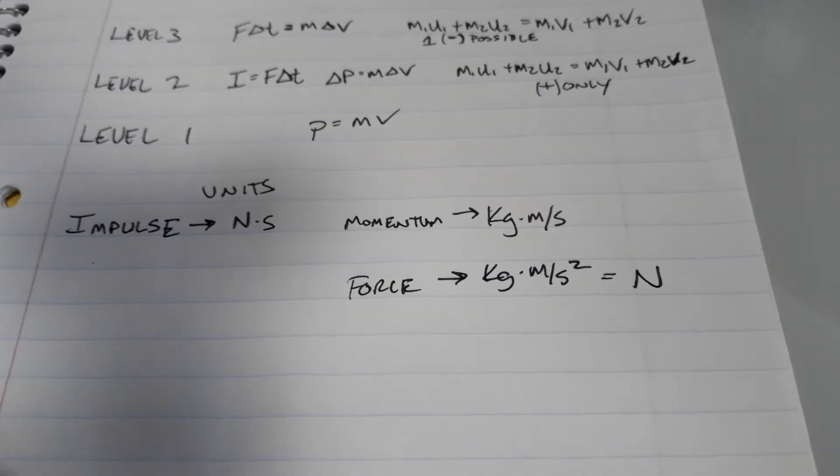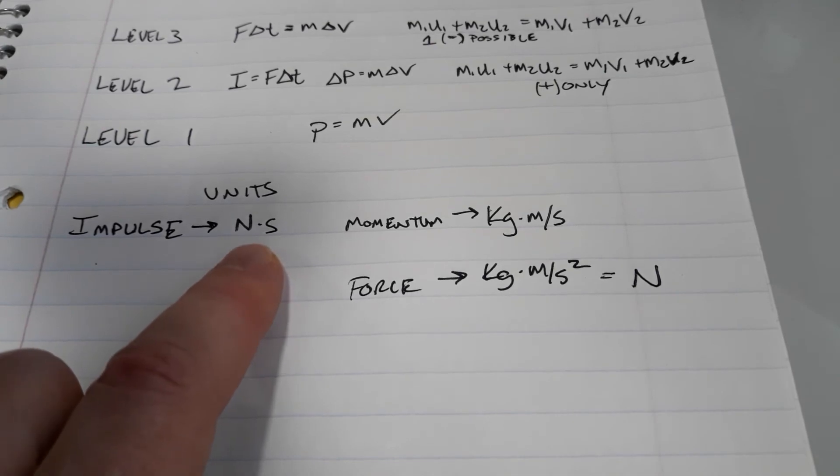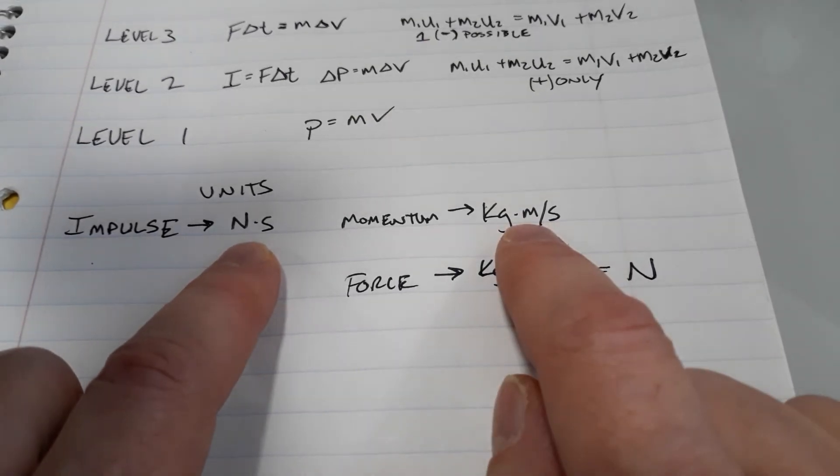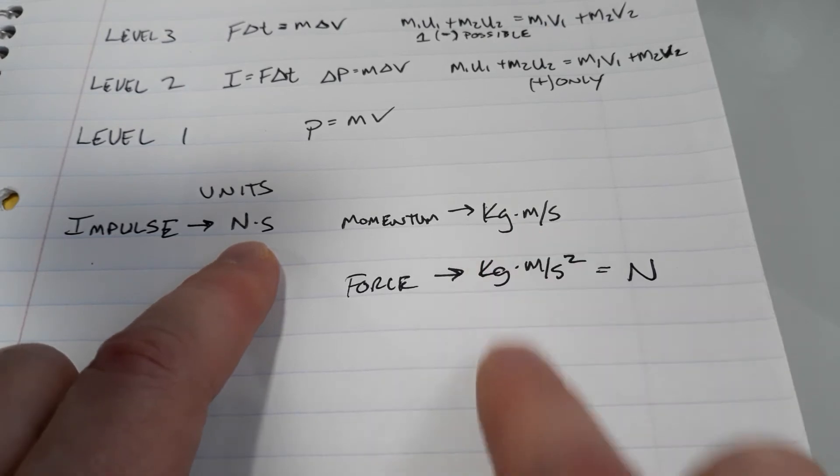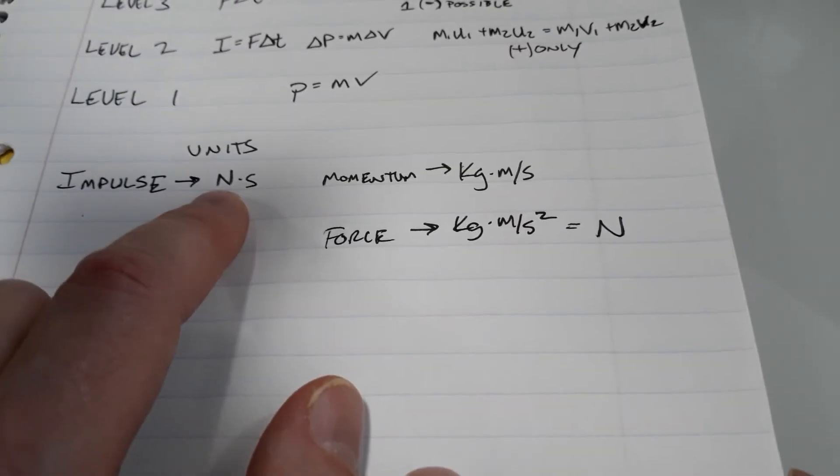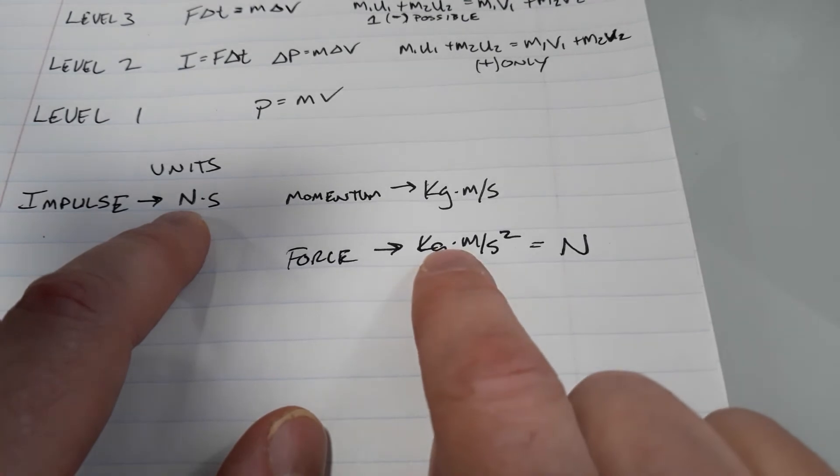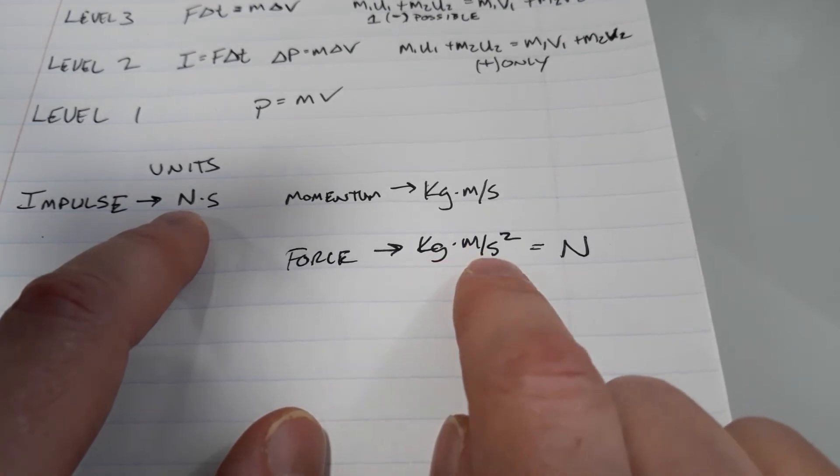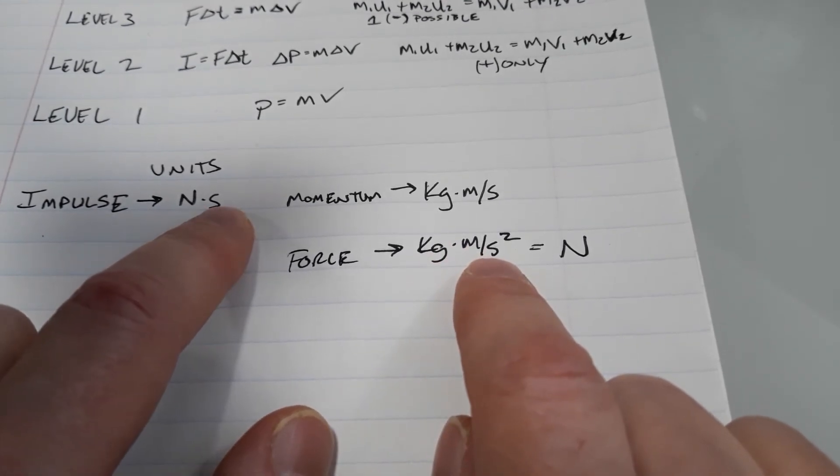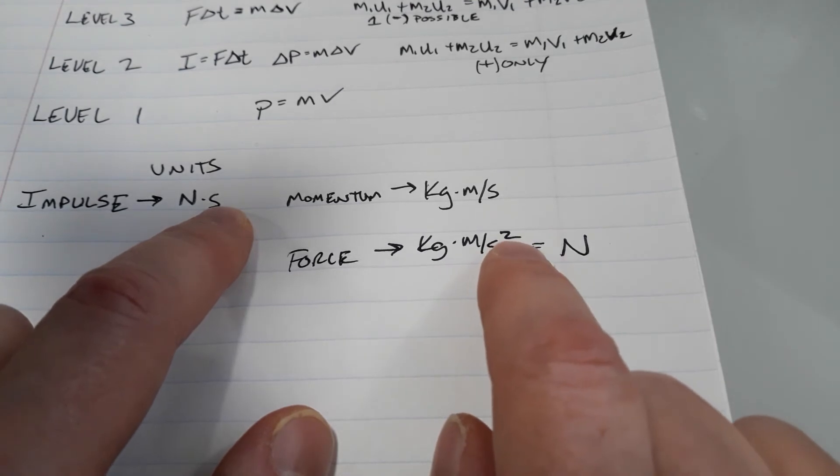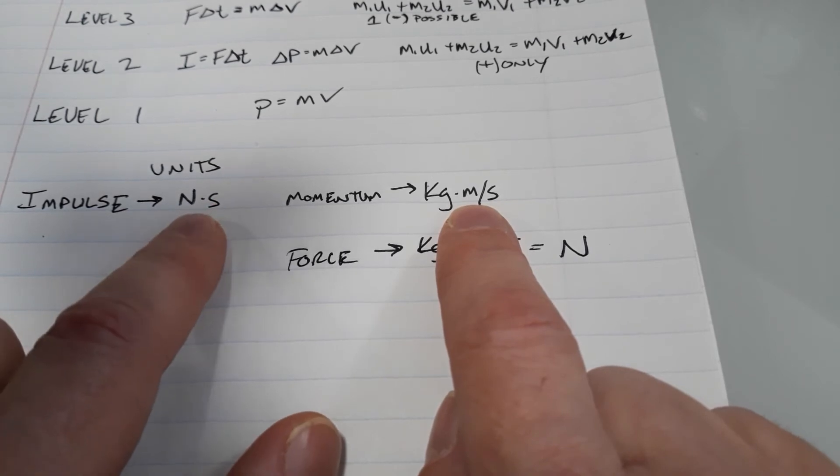Impulse and change in momentum have different units, but they must be equivalent to each other because otherwise, how could there be an equal sign between these two formulas? They must somehow be equal to the same units. In impulse, the units are Newton seconds. In momentum, it's kilogram meters per second. But what's a Newton second? A Newton second would be kilogram meter per second squared multiplied by seconds. That's going to cause one of these seconds on the bottom to be canceled, and I'll end up with the same units.